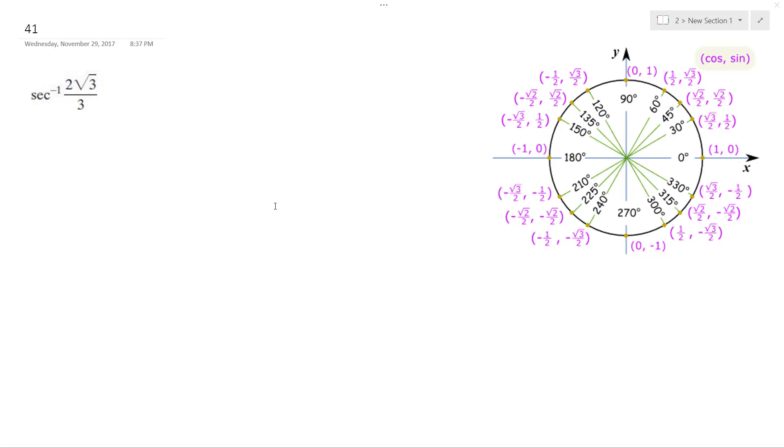Alright, we want to solve the inverse secant of 2 root 3 over 3. So this is the same thing if we make this the cosine—well, secant's 1 over cosine, so if we just reciprocate this to be like the cosine,